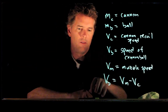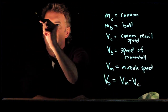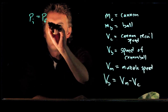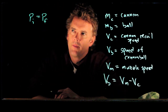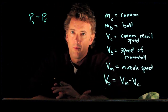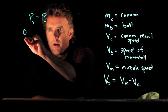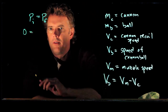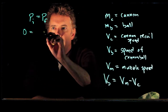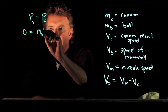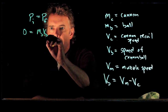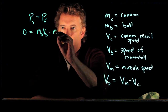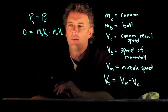Conservation of momentum tells us that initial momentum has to equal final momentum. Initial momentum is just zero — everything is sitting there at rest. Final momentum is the cannonball going to the right, M sub B times V sub B, minus the cannon going to the left, M sub C times V sub C.